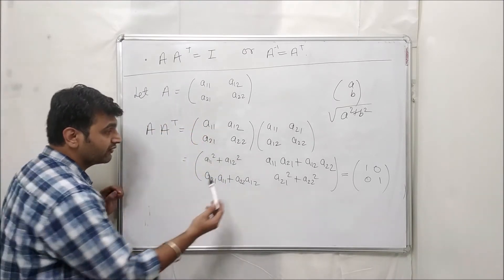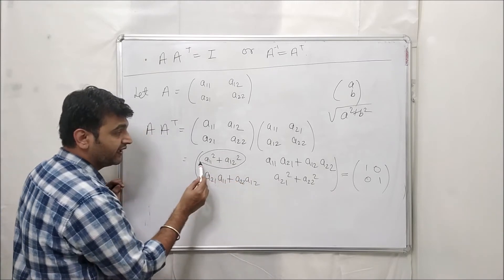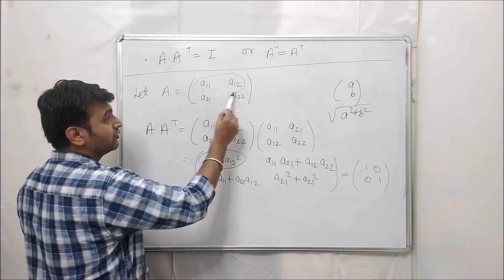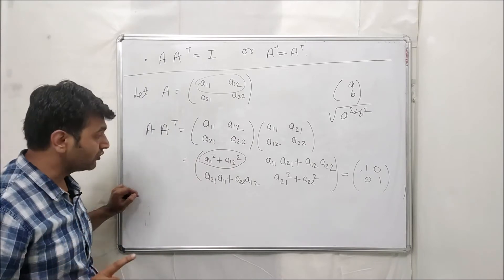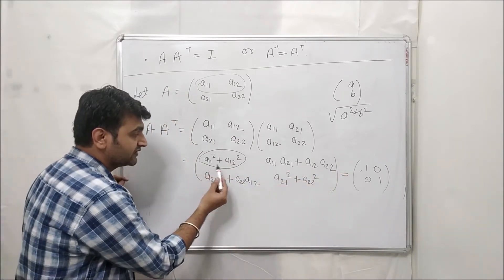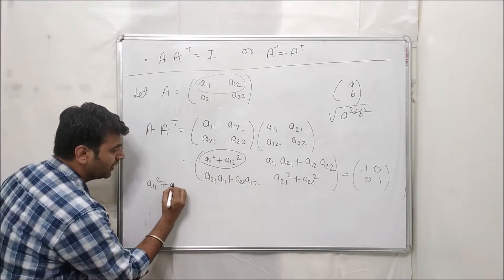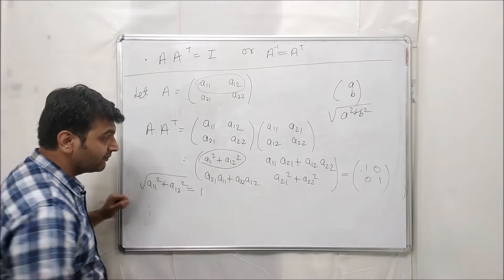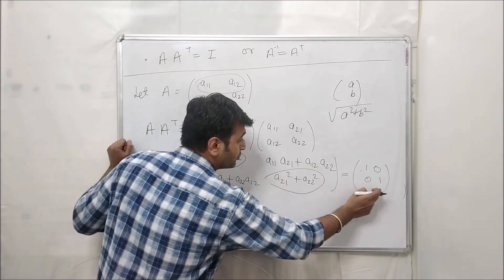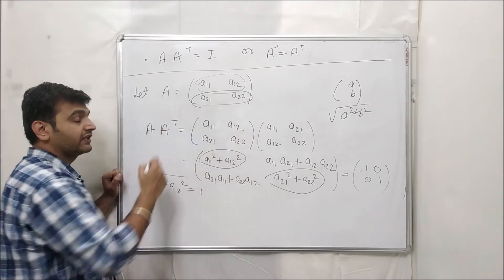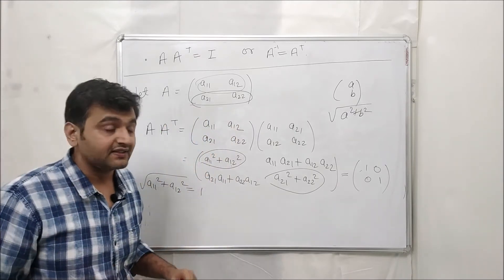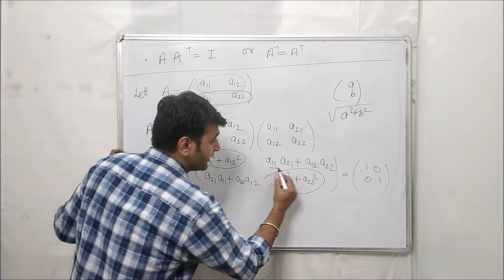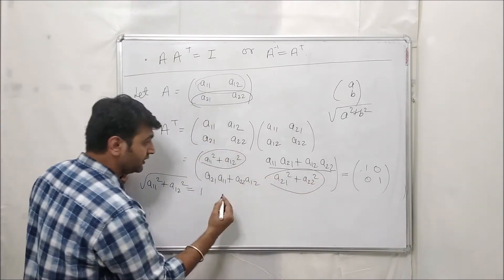Equating the entries, the first diagonal entry says a₁₁² + a₁₂² = 1. This means the first row vector has length 1, because if you take the square root it still remains 1 — since the square root of 1 is 1. Similarly, the second diagonal entry implies a₂₁² + a₂₂² = 1, meaning the second row vector also has length 1. So for orthogonal matrices, row vectors always have length 1.